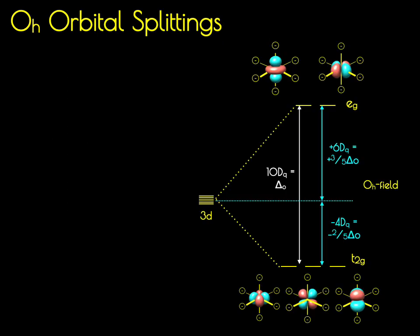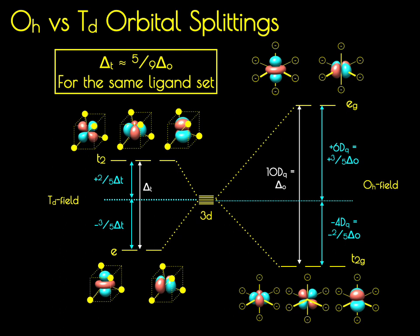In an Oh field, the d-orbitals will be split such that the dx²-y² orbital and the dz² orbital — the Eg set — are strongly destabilized relative to a spherical field, while the dxz, dyz, and dxy orbitals — the T2g set — are stabilized relative to the spherical field. Energy about the spherical field barycenter is conserved, so that the Eg orbitals are destabilized by 6Dq and the T2g orbitals are stabilized by 4Dq.